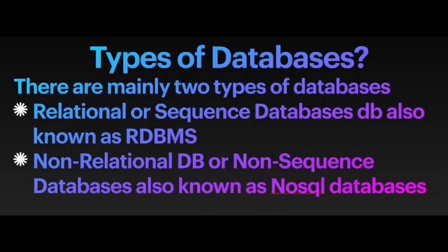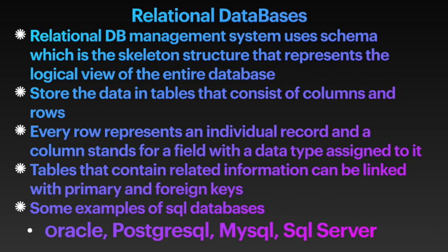To simplify: think of databases as a system where you can store, retrieve, modify, and update data, and the tool you use for all of this is SQL — Structured Query Language. There are mainly two types of databases: relational databases, also known as RDBMS, and non-relational databases, also known as NoSQL databases. In a relational database, data is stored in tables with columns and rows. Every row represents an individual record and a column stands for a field with a data type. Tables can be linked with primary and foreign keys.